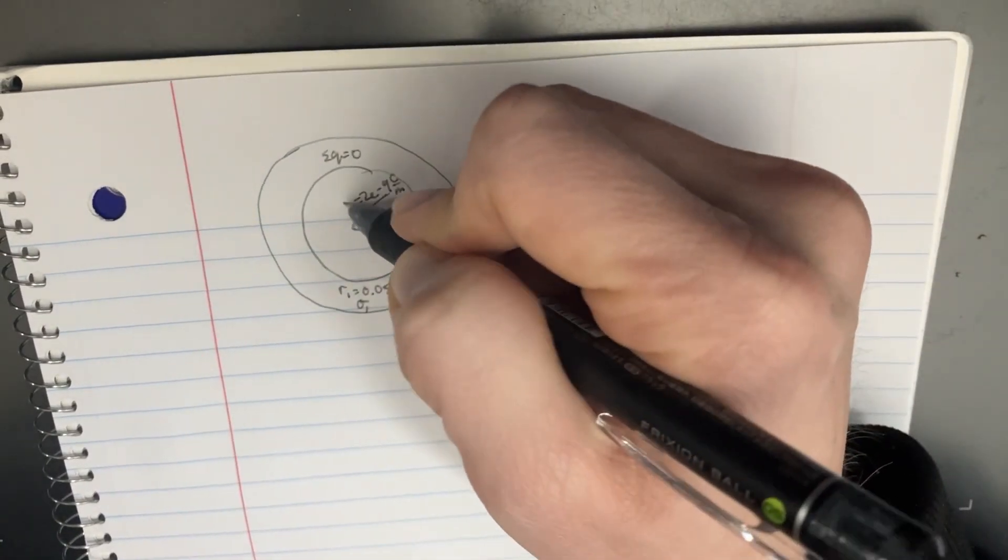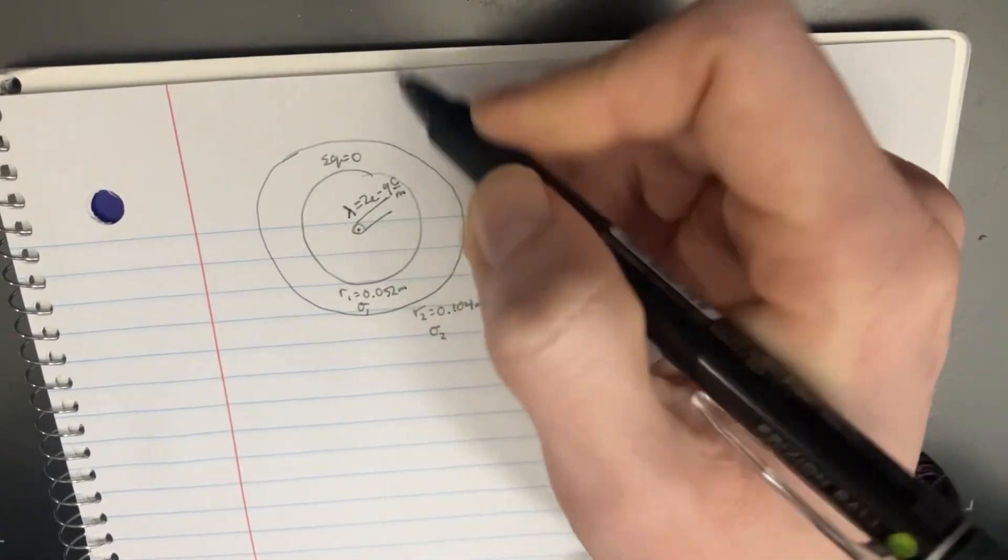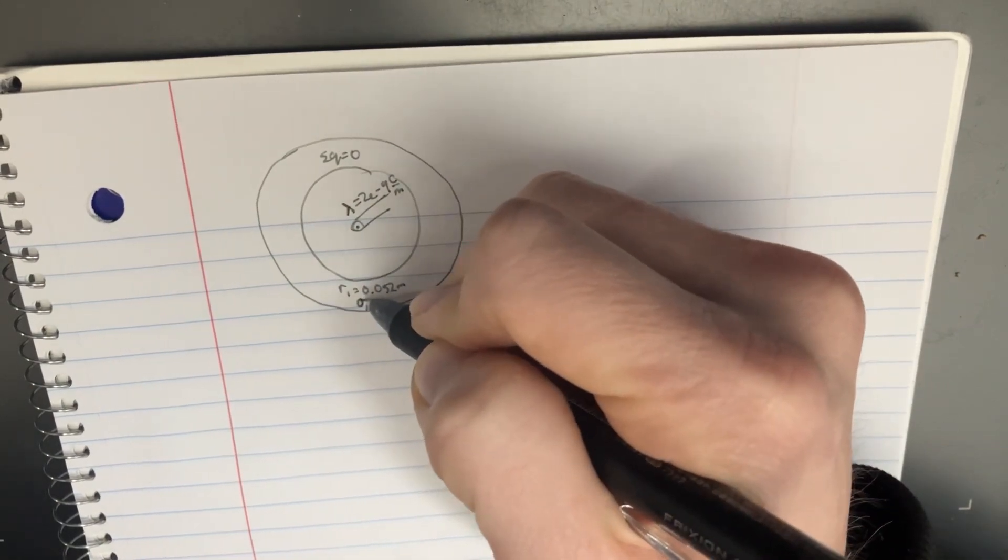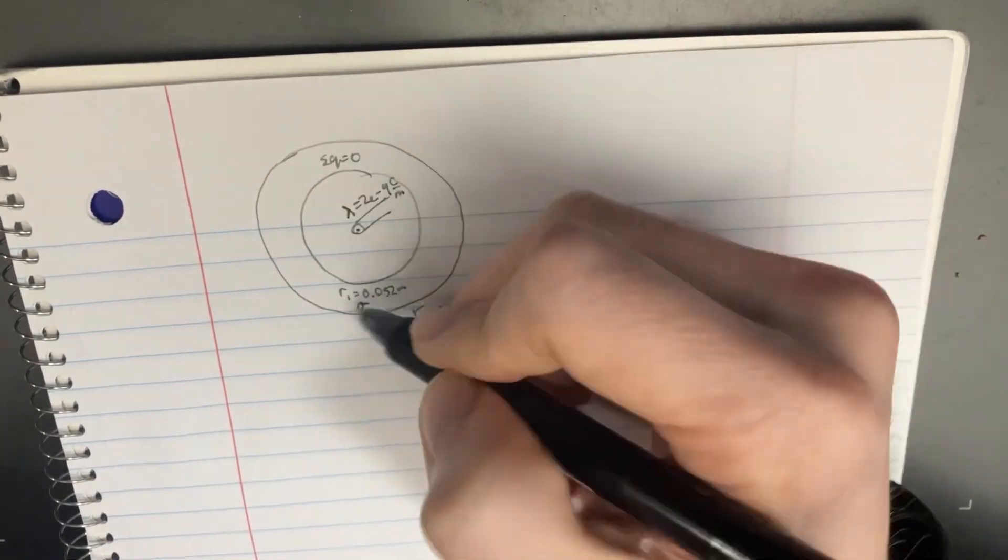So in this problem, we're given the linear charge density of the cylinder, and we're asked to find the surface charge densities of the cylinders over here.